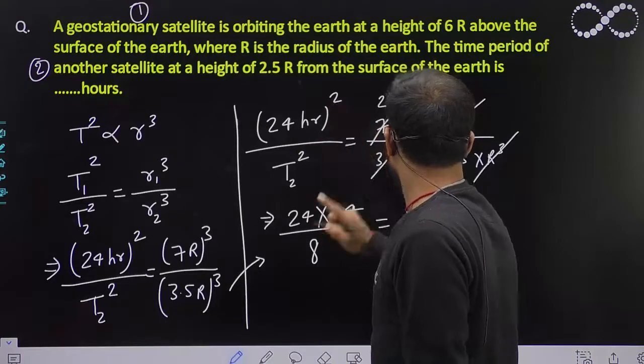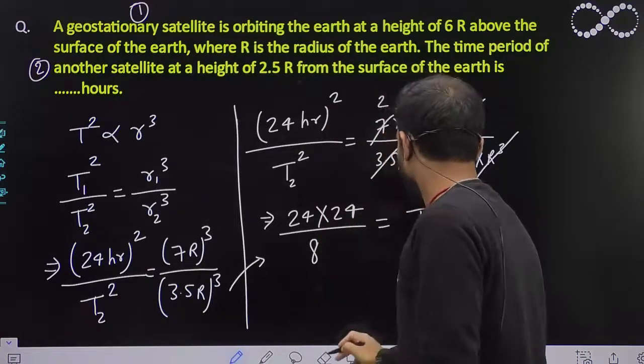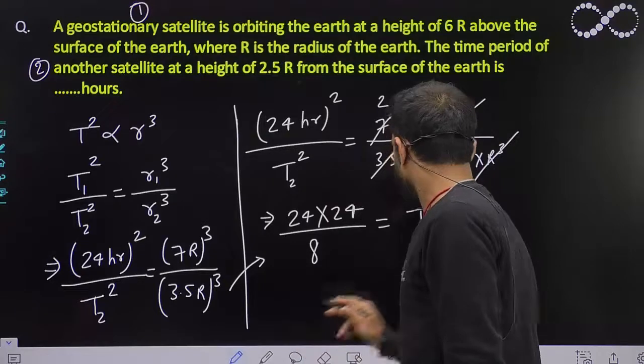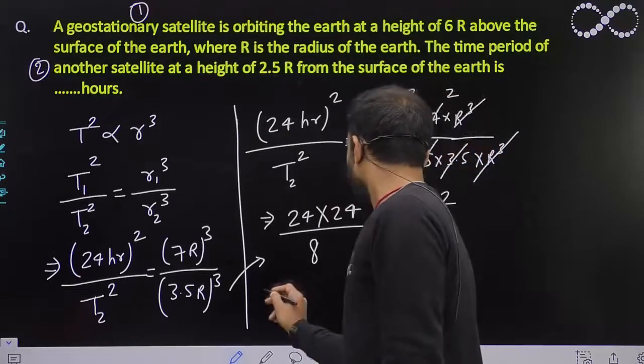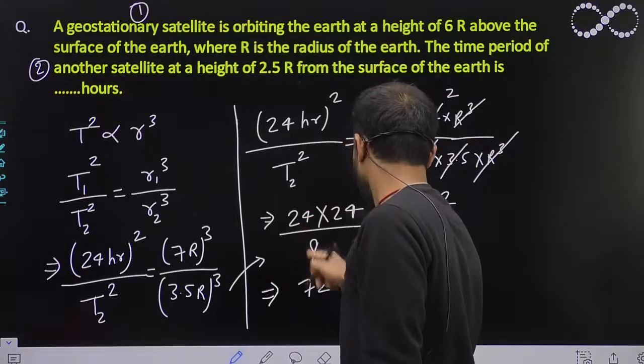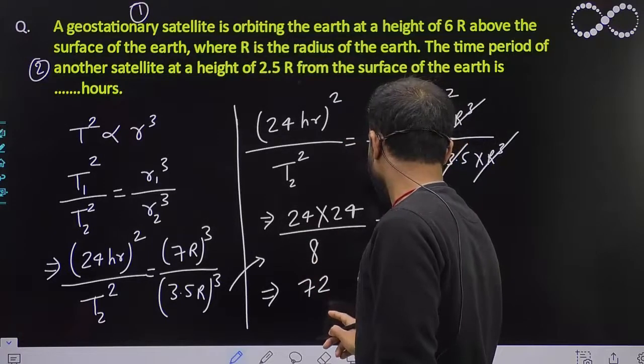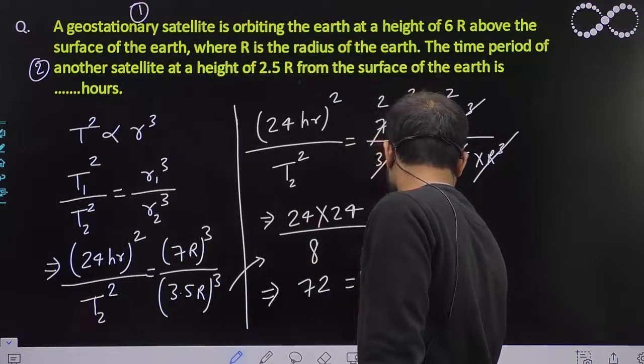24 into 24, that is a square, and 2 into 2 into 2, that will be 8 here, and this will be once again square. From here I can say this will be 2 squared right, and this will be T2 square.